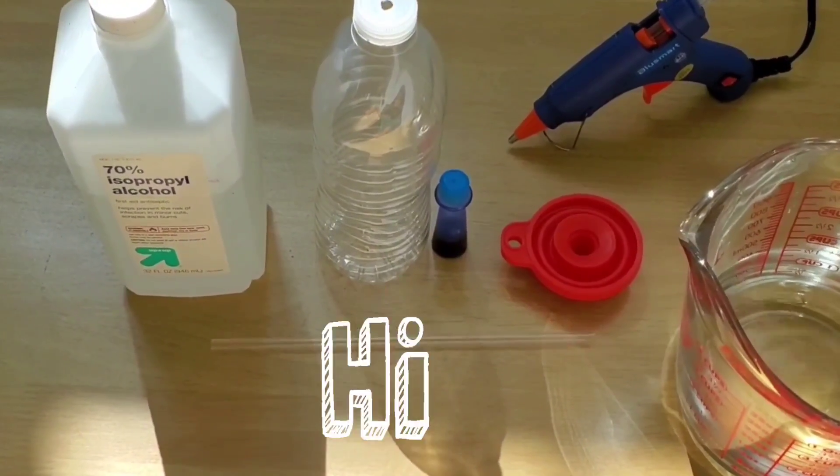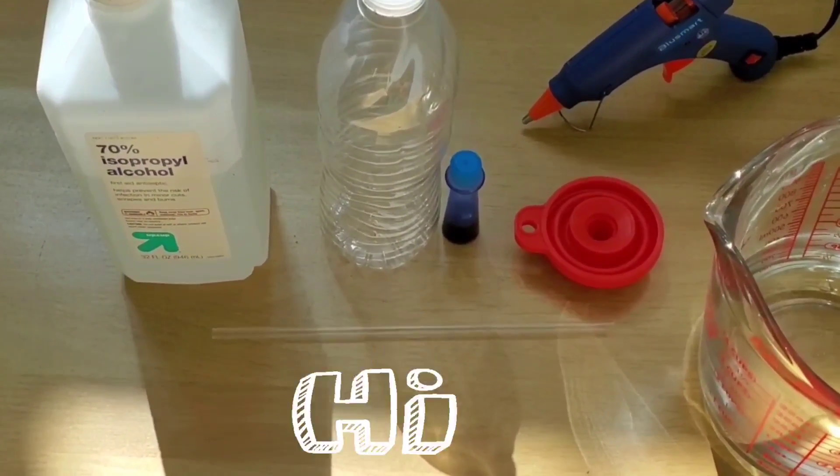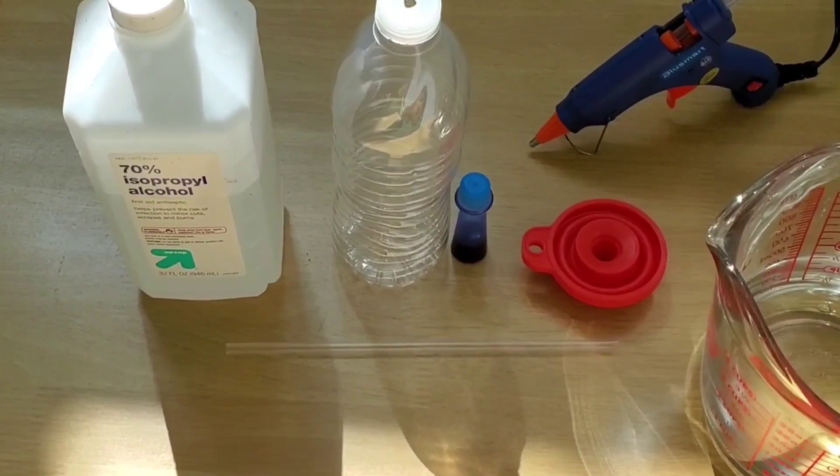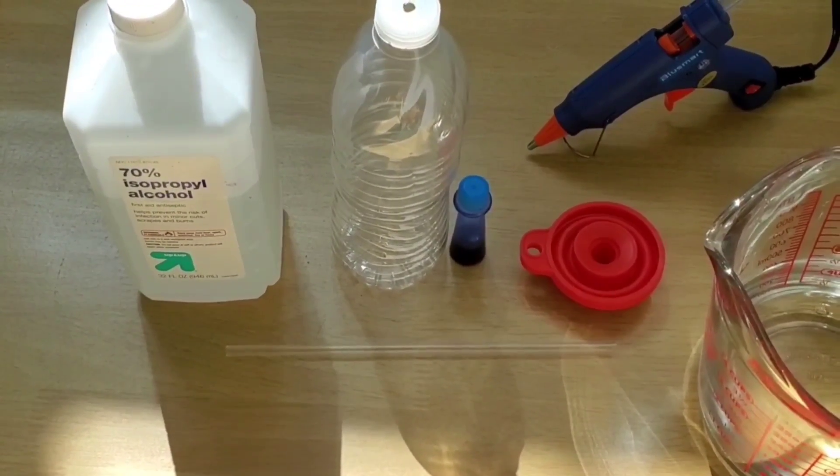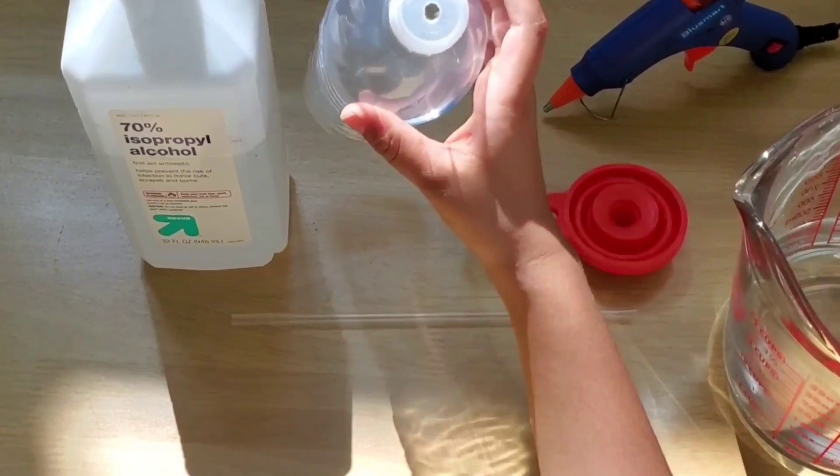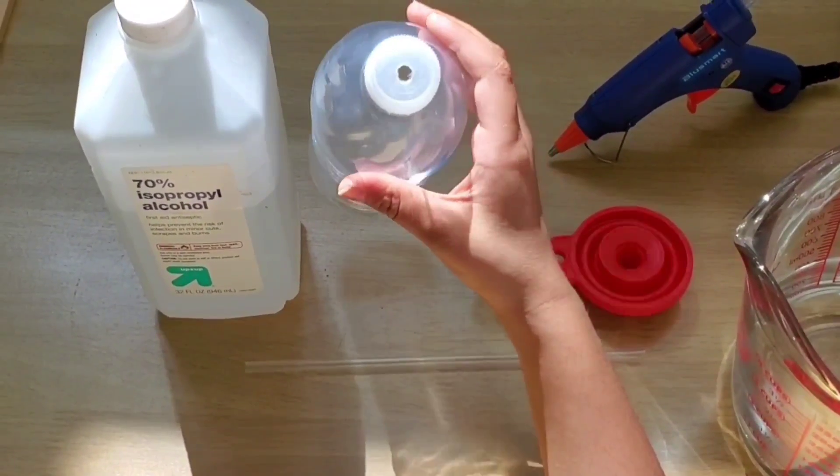Hi, welcome back! Today we're going to make a thermometer. So here's what we need: rubbing alcohol and a plastic bottle with a hole on the lid.